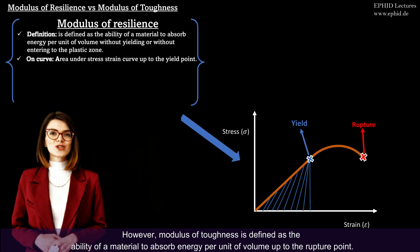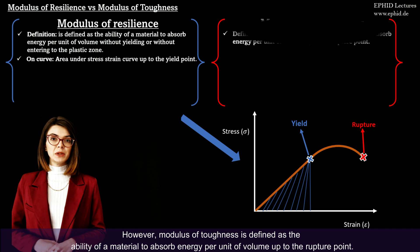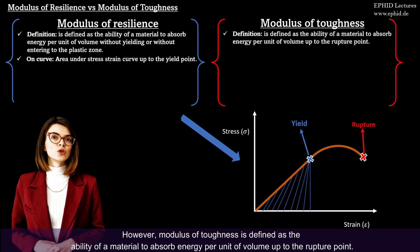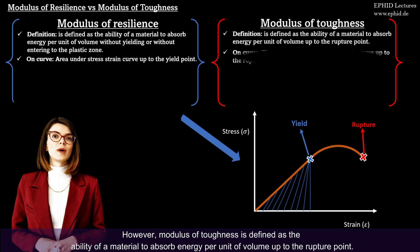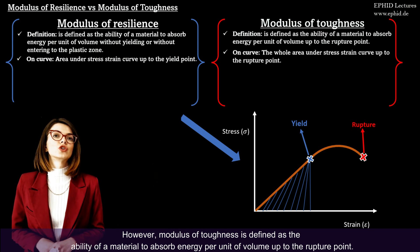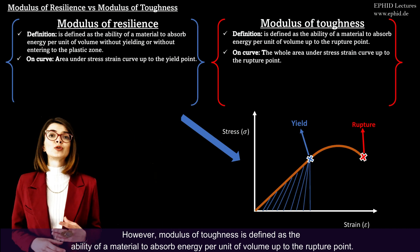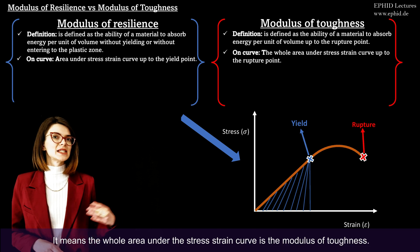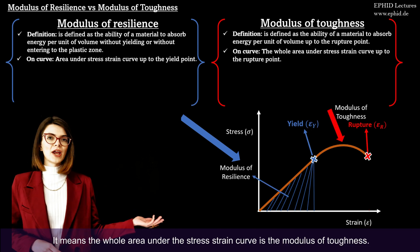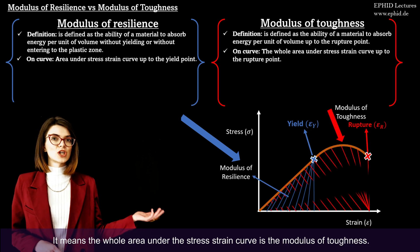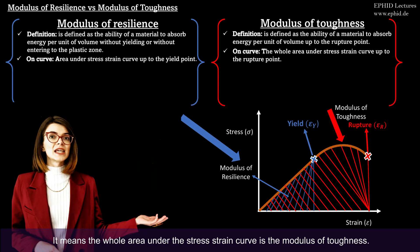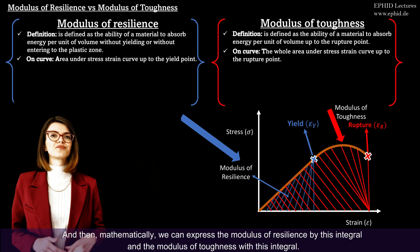Modulus of toughness is defined as the ability of a material to absorb energy per unit of volume up to the rupture point. That means the whole area under the stress-strain curve is the modulus of toughness.